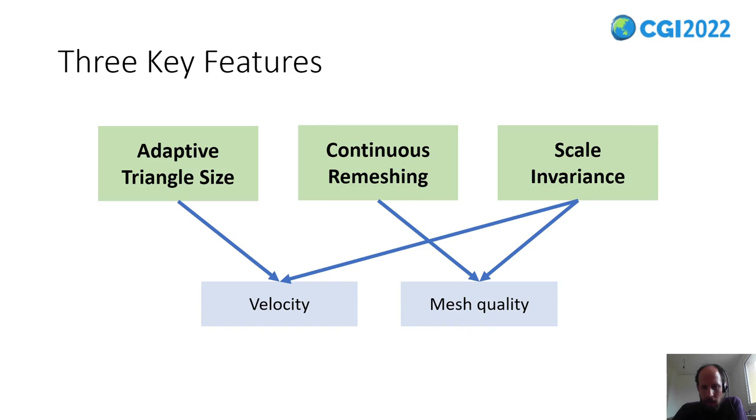And the third key feature is scaling variance. It means that our method should work for very small and very large triangles efficiently at the same time. Of course improving the mesh quality is also beneficial for increasing the velocity.